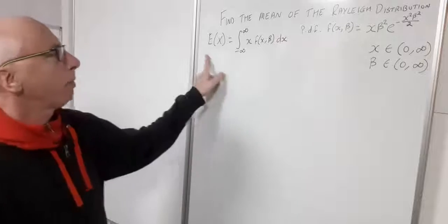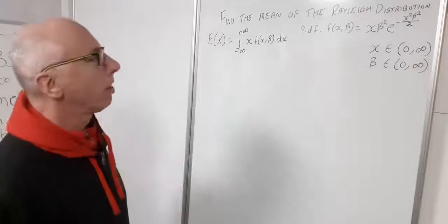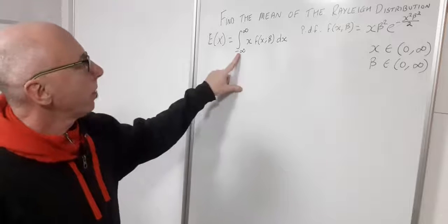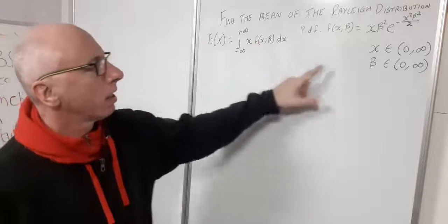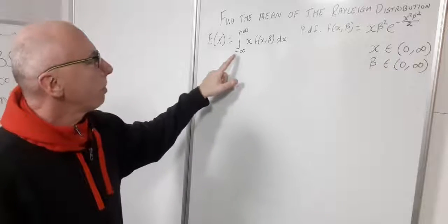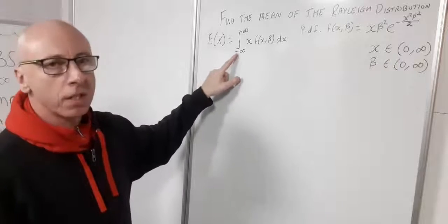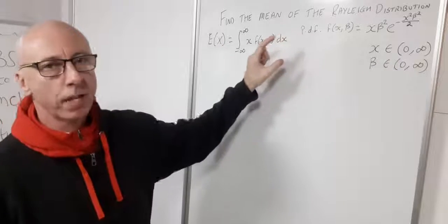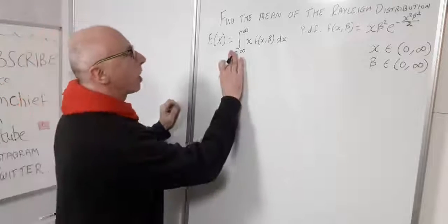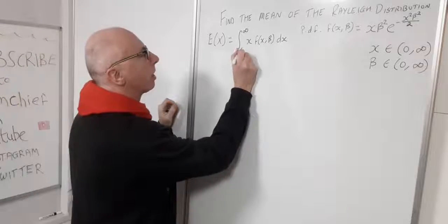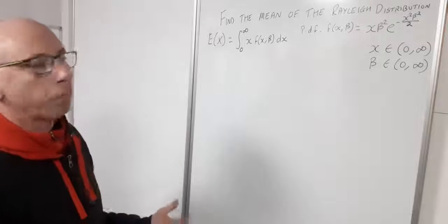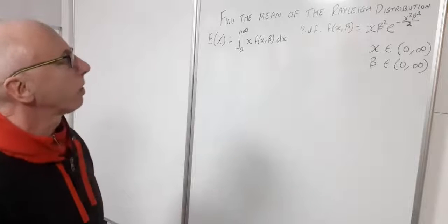That's our basic rule for finding the mean. Now x is only defined on zero to infinity, so from negative infinity to zero this integral is zero anyway. We can eliminate that and change our limits right from the beginning to zero to infinity, because below zero the distribution has no value.